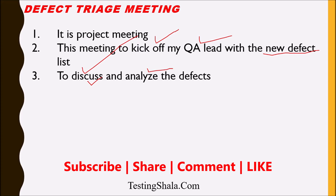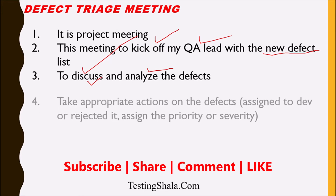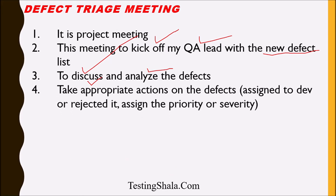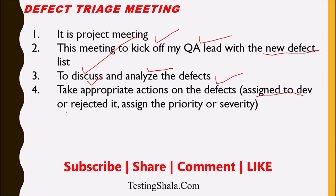After discussing each defect in the meeting, necessary actions are taken. If a defect has been accepted, it will be assigned to the development team. If it requires more information or is not a valid defect, it will be rejected. Priority and severity are also assigned to every defect based on its criticality to the business.